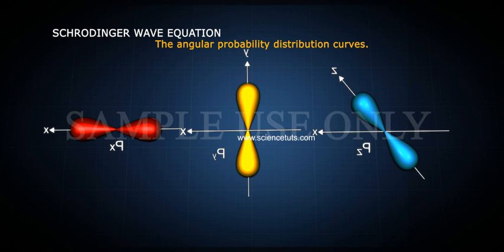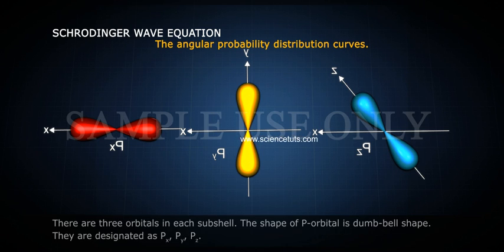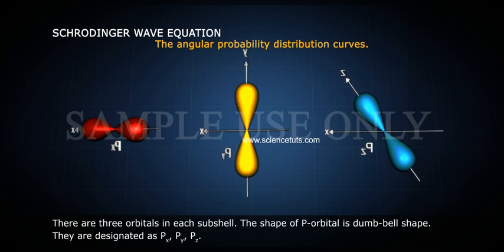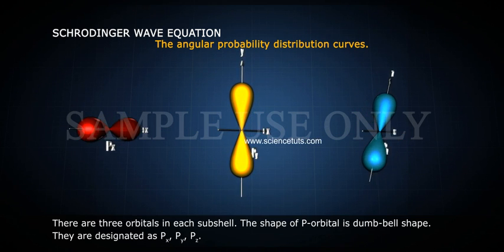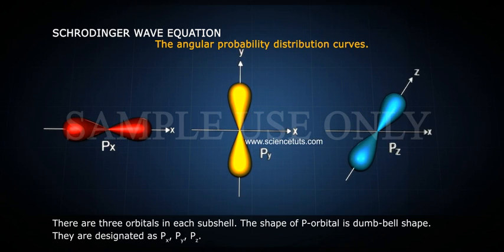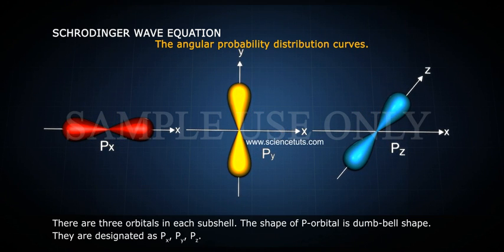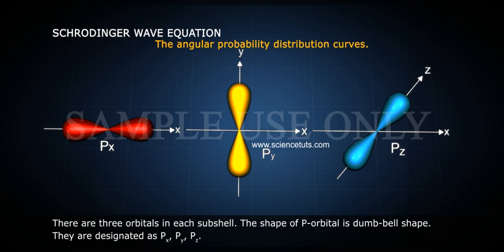The angular probability distribution curves for P orbital: there are three orbitals in each subshell. The shape of P orbital is dumbbell shape. They are designated as px, py, and pz.